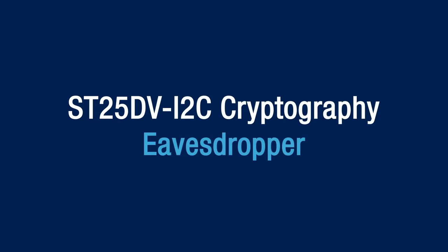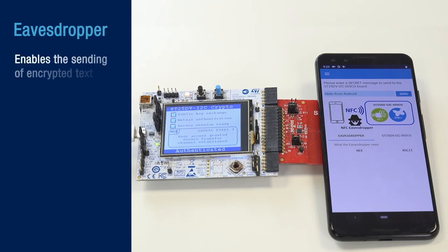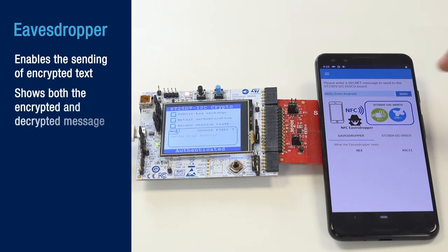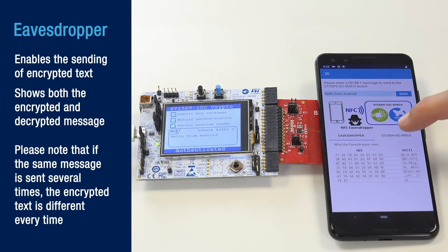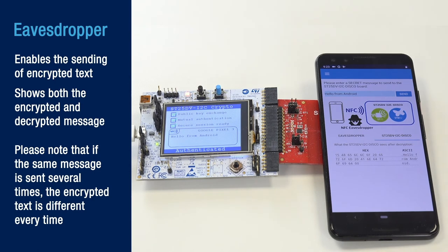We're going to start with the eavesdropper demonstration. This feature enables the sending of encrypted text and shows both the encrypted and decrypted message. Please note that if the same message is sent several times, the encrypted text is different every time.